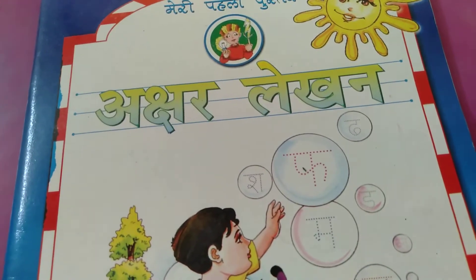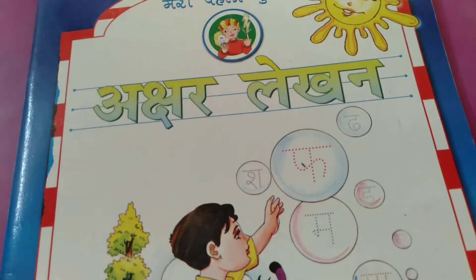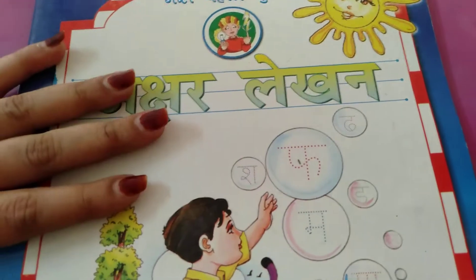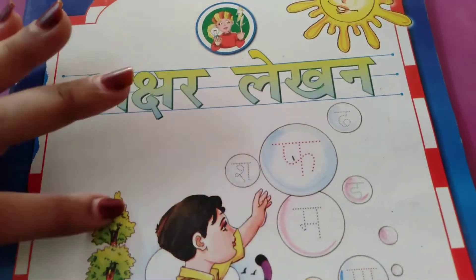Assalamualaikum to all the parents and my dear students of senior KG class. Today in this session we do Hindi subject. Students take out your Hindi book, Akshar Lekhan. Hindi mein hamara August month ka syllabus complete ho gaya hai. Aaj ham September month ka portion start karenge.